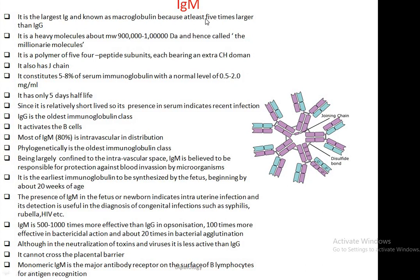In the case of IgM, it has a pentameric structure — five monomers — held together with the help of disulfide bonds and a joining chain. IgM is known as a macromolecule because it is five times larger than IgG and has a heavy molecular weight of about 900,000 daltons, and hence is called the millenary molecule.